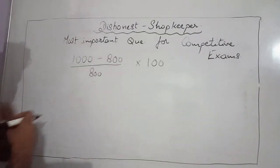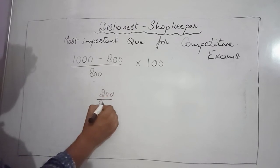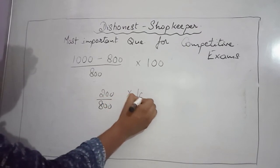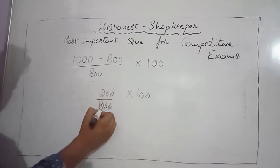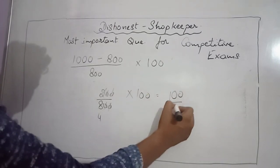It comes out to be 200 upon 800 multiplied by 100. Zeros cancel, two and eight cancel, and it comes to 100 upon 4.